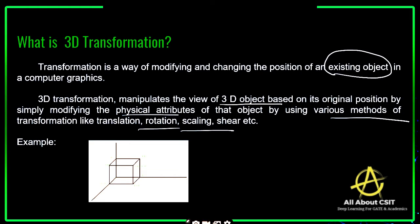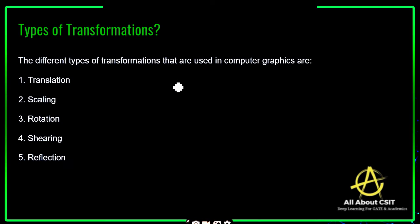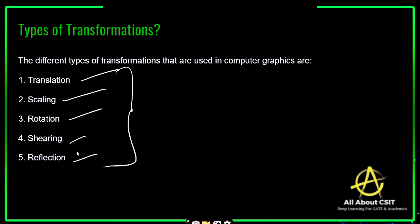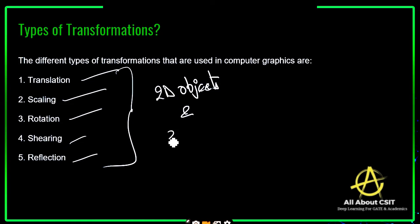If you consider a cube present on the XYZ plane, the different types of transformations used in computer graphics are translation, scaling, rotation, shearing, and reflection. These are all the different types of transformations that can be applied on 2D objects as well as 3D objects.